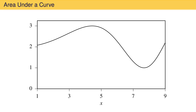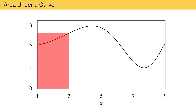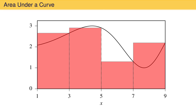Let's say we want to find the area under this function on the interval from 1 to 9. One way to do this is to divide the region into four segments and to draw a rectangle inside each segment such that the upper right corner of each rectangle touches the function. The sum of the area of these rectangles is an estimate of the area under the curve. The estimate is obviously poor in this case because the rectangles are just too wide.